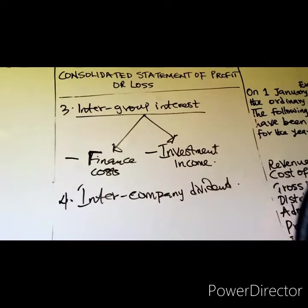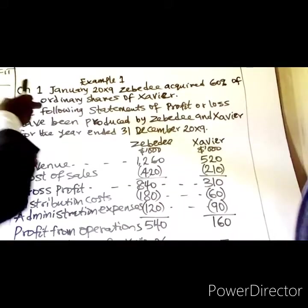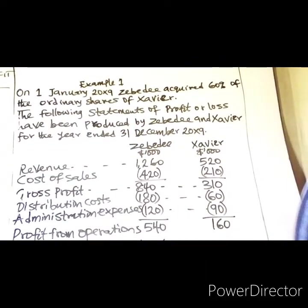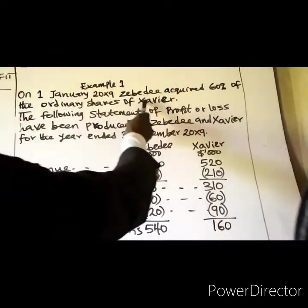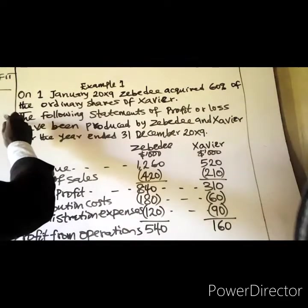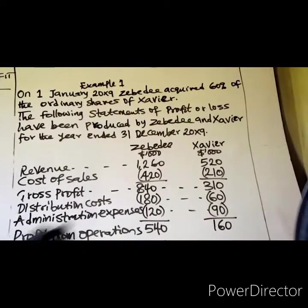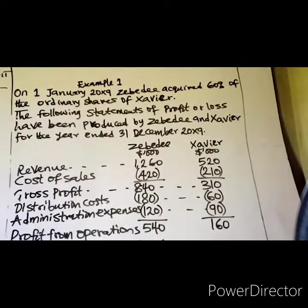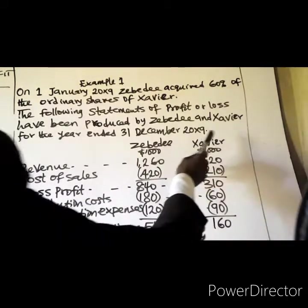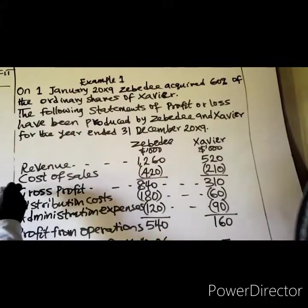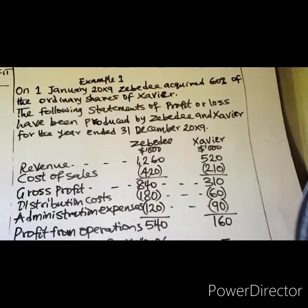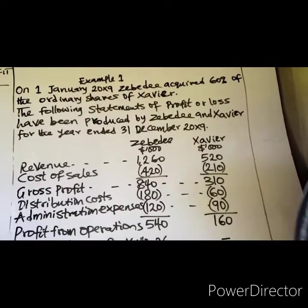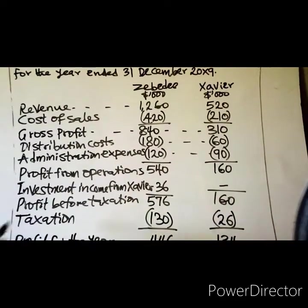We will now work through an example from the Kaplan ACCA study text. On 1st January 20X9, ZBD acquired 60% of the ordinary shares of Zavia. The following statements of profit or loss have been produced by ZBD and Zavia for the year ended 31st December 20X9. We have revenue, gross profit, distribution costs, administration expenses, profit from operations, and investment income from Zavia.